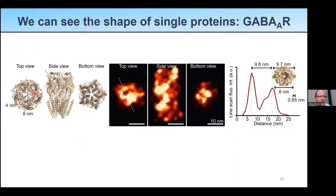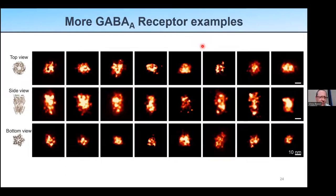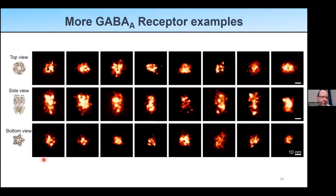These are other molecules. This is a GABA receptor from our colleague Radu Aricescu from Cambridge, who sent us these receptors to look at. We think this is a top view, a side view, and probably a bottom view. Size-wise they are around what you would expect. We see various tops, sides, and bottom views.